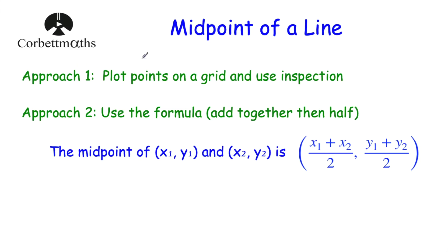In terms of finding the midpoint of a line, there are two different approaches I would typically use. The first approach is to plot the points on a grid and use inspection — to look at the grid and see where the midpoint of those points are. The second approach is to use the formula: add together the coordinates and then halve them. To find the midpoint of (x1, y1) and (x2, y2), we add the x coordinates and divide by 2, and add the y coordinates and divide by 2.